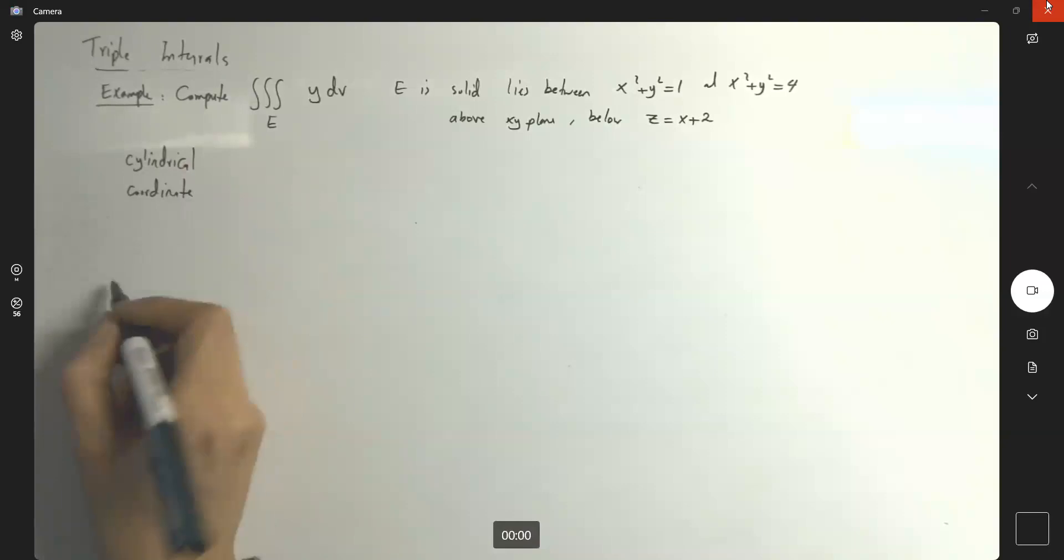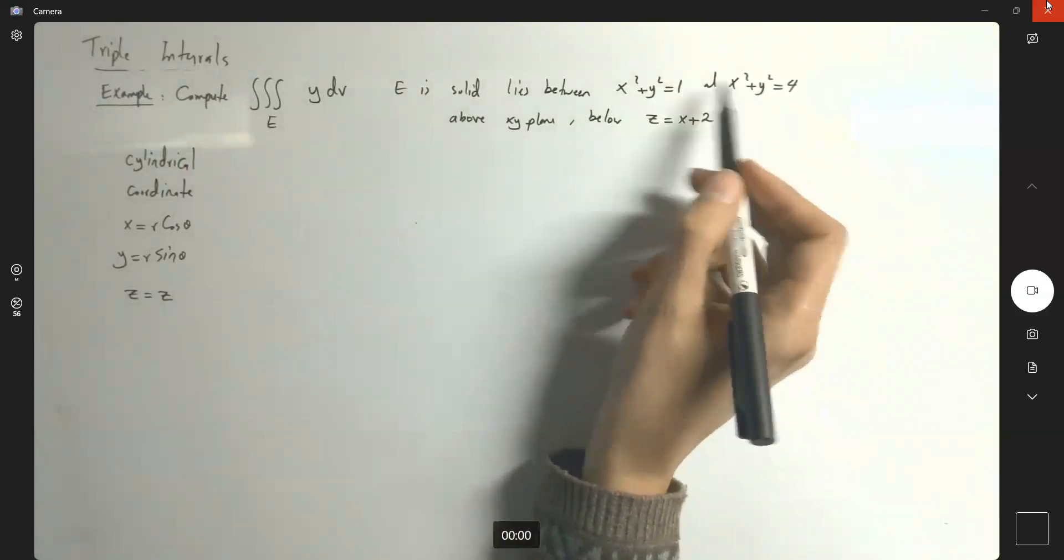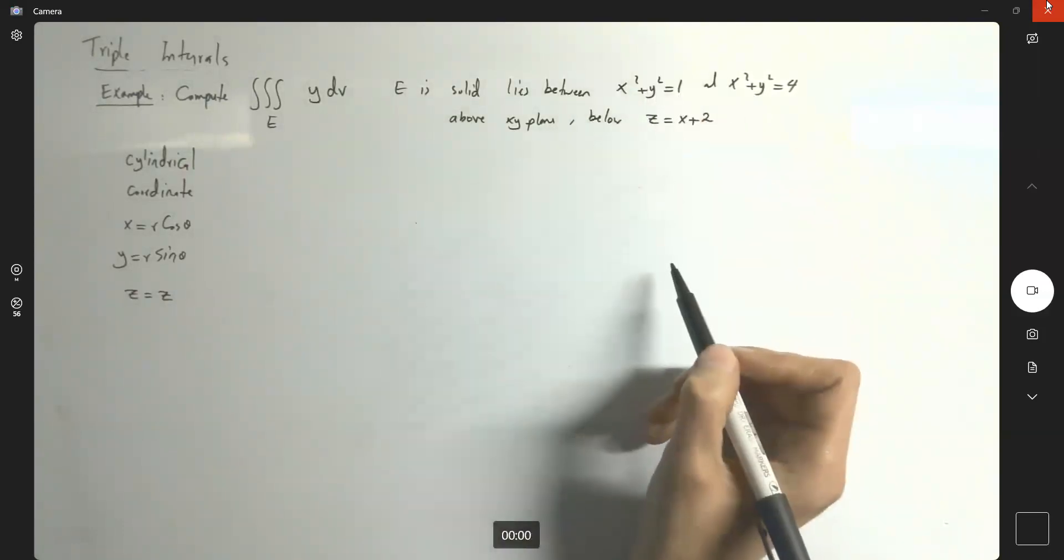In cylindrical coordinate system, x is r cosine theta, y is r sine theta, and z is equal to z. Why I'm not changing this? Because both of these have axes of symmetry which are z axes.